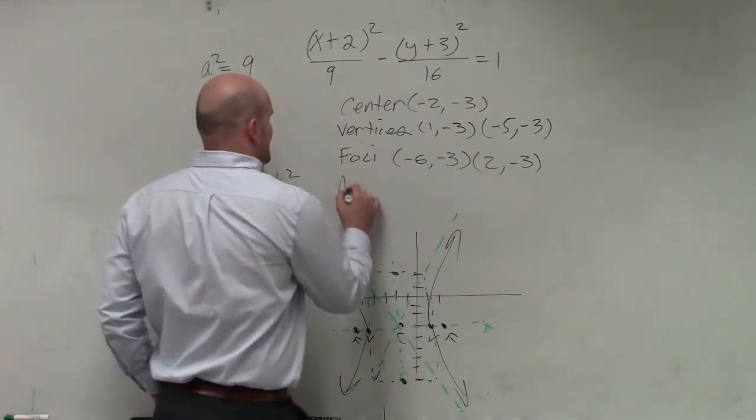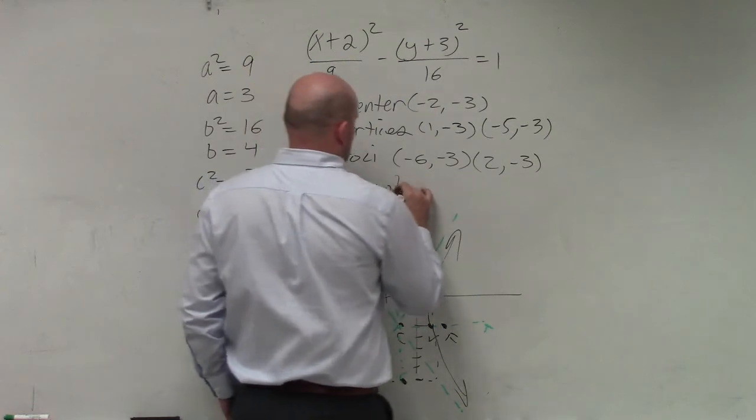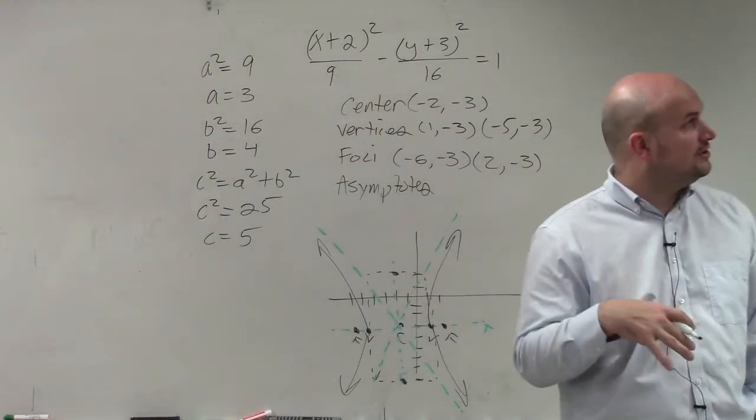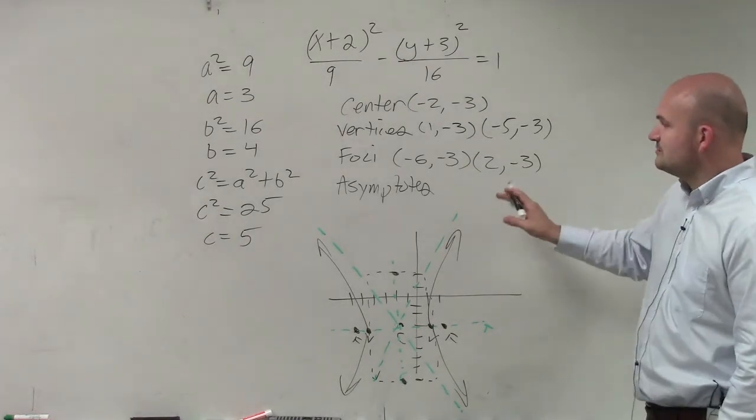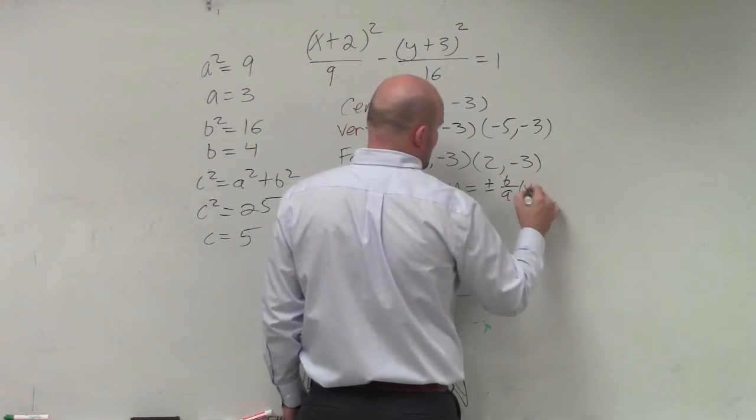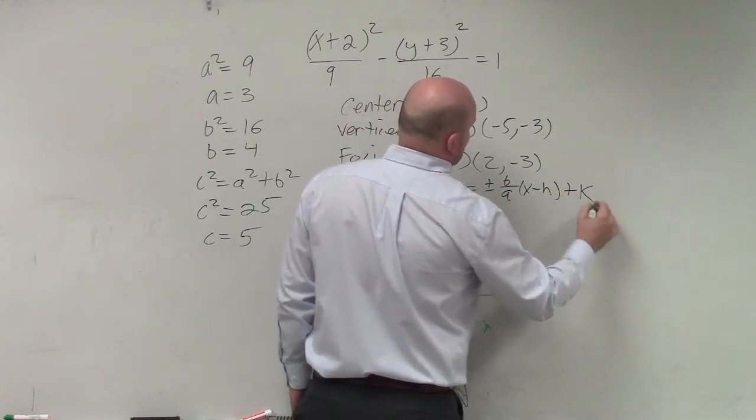And then last, but not least, is my asymptotes. So the only difference between a vertical and a horizontal transverse axis for asymptotes is that the a over b is now switched. So now it's b over a times (x-h) plus k.